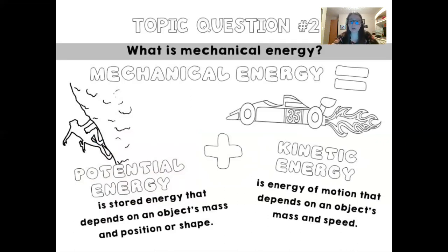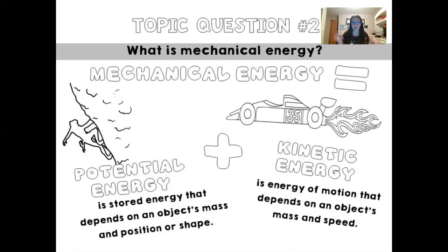Now talking about mechanical energy. Mechanical energy is the product of adding potential energy and kinetic energy together. Potential energy is stored energy that depends on an object's mass and position or shape, and kinetic energy is the energy of motion that depends on an object's mass and speed. The combination of kinetic and potential energy in each object gives it mechanical energy — or the ability to move.